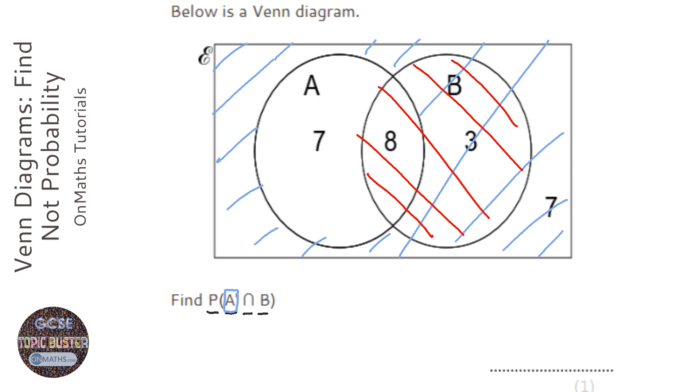So the word and, or this symbol here, and, means it's got to be both in the blue zone and the red zone. So the only place that that is the case is inside this bit here.